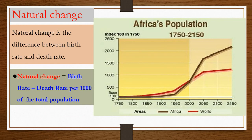Natural change in a population is the difference between birth rate and death rate. The formula is: natural change = birth rate minus death rate, per 1,000 of the total population.